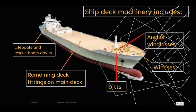Mooring operations require winches. Winches set the tension of mooring lines, cables or chains to secure the ship. The mooring winches stabilize the ship and keep it from drifting.